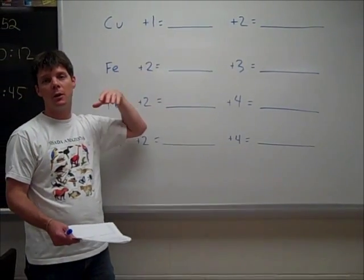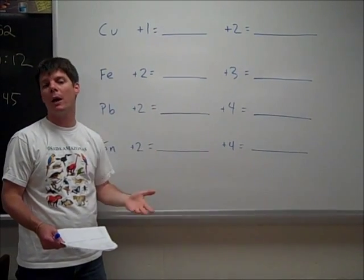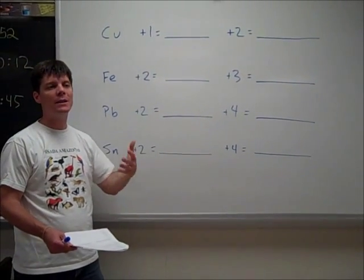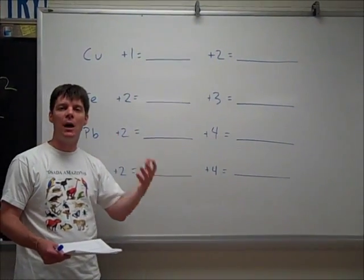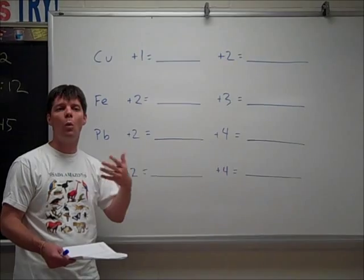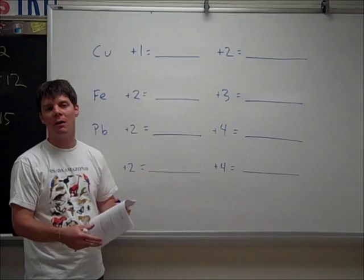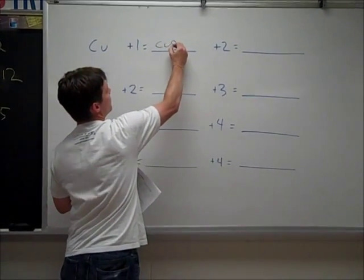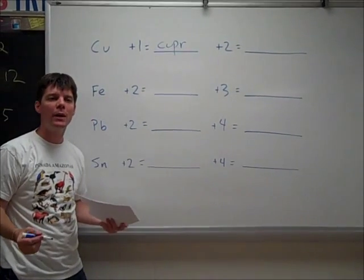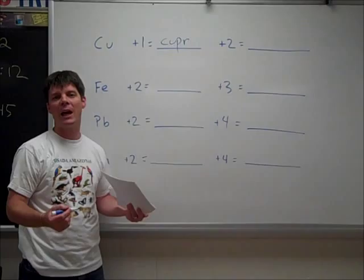Now, previously you've learned that copper can form either a plus one or a plus two ion. So we need to have a way of indicating this in the name. That's going to be done with a suffix that lets us know which version of the copper ion we're dealing with. I'm going to use the beginning of the Latin name cuprum, and then I'm going to indicate the plus one by using a suffix. In this case, it's -ous.